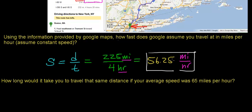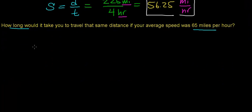Now, the speed limit on most highways in the United States is 65 miles per hour. So my next question is: how long would it take to travel that same distance if you were traveling at 65 miles per hour instead of 56.25 miles per hour? Again, we're going to assume you're traveling at constant speed.